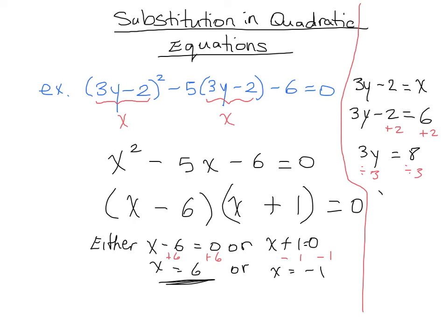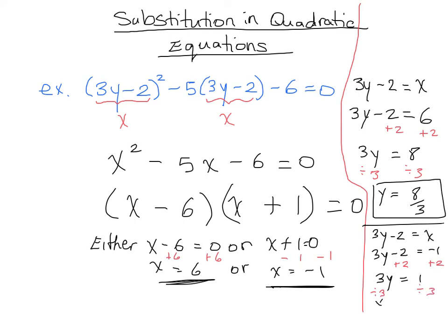But that's just one of our answers. We still need to find what happens when x is negative 1. So 3y minus 2 is equal to x, that's the relationship we created. So 3y minus 2 is equal to negative 1. We can add 2 to both sides once again and we get that 3y is equal to 1. And finally we divide both sides by 3 and we get that y is a third, and we're done.